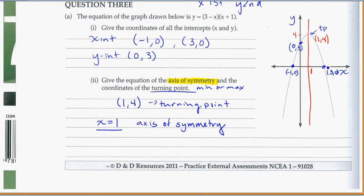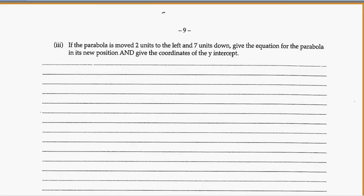We want to move down seven and to the left two. Let's write in the points we had: (negative 1, 0), (3, 0), (0, 3), and (1, 4) — our turning point. To transform, we go left 2, so minus 2 from x, and down 7, so minus 7 from y.